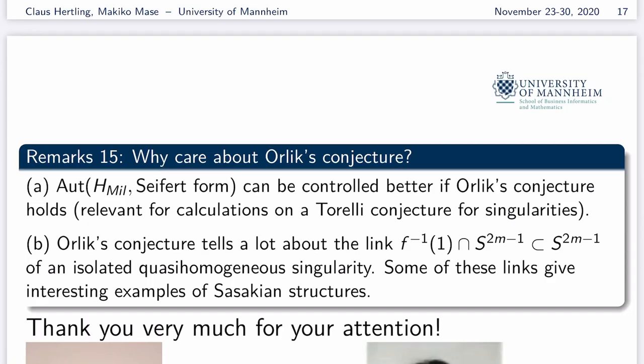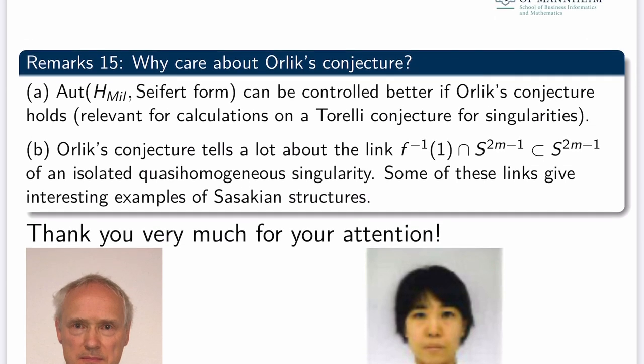Why should we care about Orlik's conjecture? There are many reasons; I offer two. First, I care about the automorphism group of the Milnor lattice with the Seifert form, which can be controlled much better if Orlik's conjecture holds — relevant for calculations on a Torelli conjecture and Brieskorn's conjectures, which I have worked on for many years. Second, Orlik's conjecture tells a lot about the link of the quasi-homogeneous singularity, and some of these links give interesting examples of Sasakian structures, so people who care about Sasakian structures also care about Orlik's conjecture. Thank you very much for your attention.